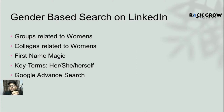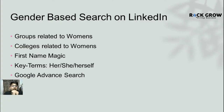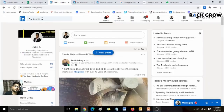These are the various parameters we're going to follow. First, we'll fetch some groups related to women, where only women will be participants. Second, we'll look at colleges related to women. Third, we'll use first name combinations that yield only women in search results. Fourth, we'll use key terms like 'her,' 'she,' and 'herself.' Then we'll do some Google advanced searches to scrape LinkedIn profiles of women.